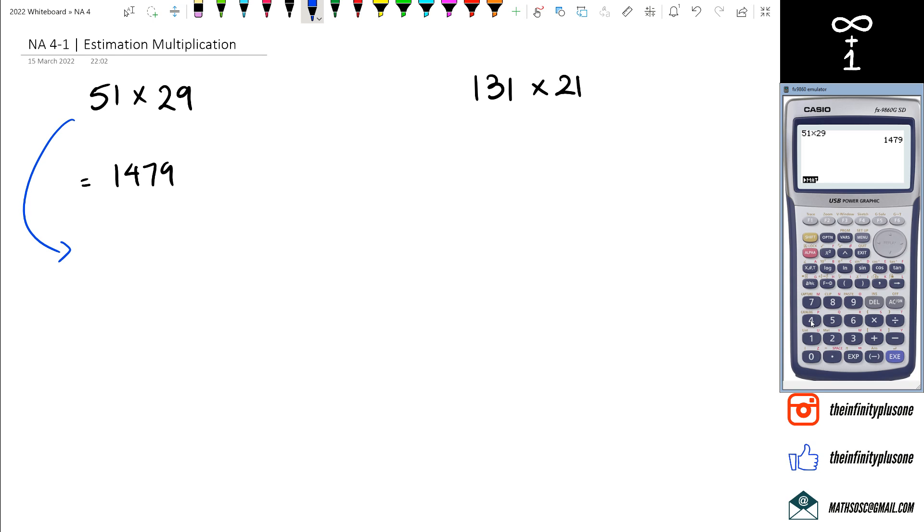But when it comes to estimation, what I tend to do is I go okay, 51 is kind of close to 50, 29 is kind of close to 30. So I'm just going to do 50 times 30. I've got two zeros I'm just going to add on, and then 5 times 3 is 15.